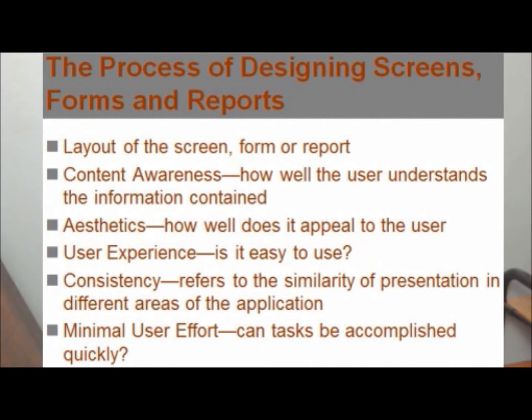As with pretty much everything else we've covered in systems analysis and design, there is also a process for designing screens, reports, and forms — and it's a six-part process. The six parts are: layout of the screen, content awareness (how well the user understands the information on your screen), aesthetics (how it appeals to the user), user experience (is it easy to use?), consistency (things looking the same as you go through them), and minimal user effort (can the task be accomplished quickly?).